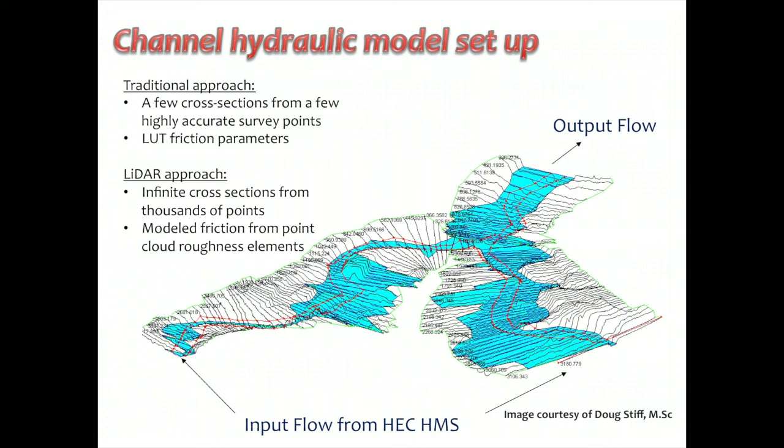This is what everything looks like when it's all put together: we've got all these cross sections and we can route water through them. One really powerful aspect of having such a high-resolution, accurate LiDAR-derived DEM is that we are essentially unbounded by the number of cross sections we can use. Typically, if you send a field crew to extract cross sections, you won't be doing them every 10 meters — it would cost too much and take too long. But there's no reason not to do that with a LiDAR-based cross section.